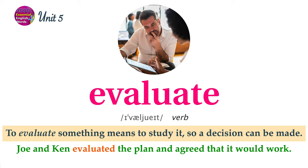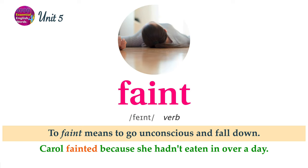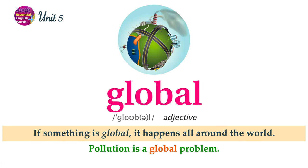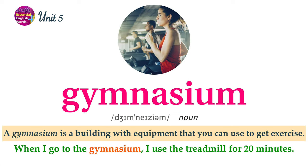To evaluate something means to study it so a decision can be made. Joe and Kenny evaluated the plan and agreed that it would work. To faint means to go unconscious and fall down. Carol fainted because she hadn't eaten in over a day. If something is global, it happens all around the world. Pollution is a global problem. A gymnasium is a building with equipment that you can use to get exercise. When I go to the gymnasium, I use the treadmill for 20 minutes.